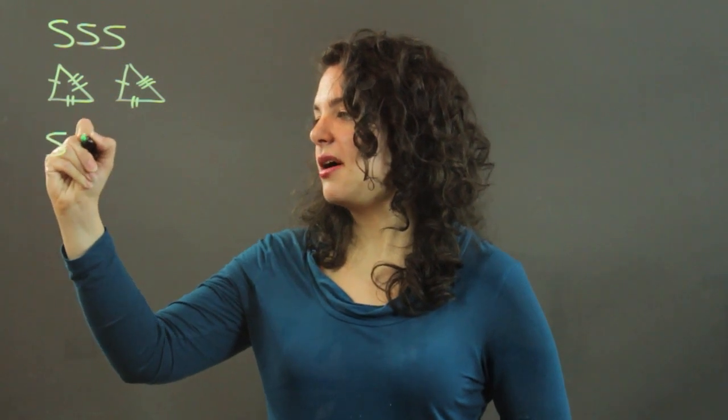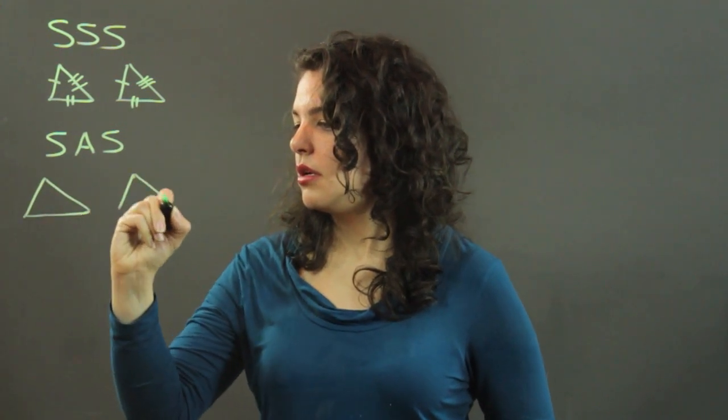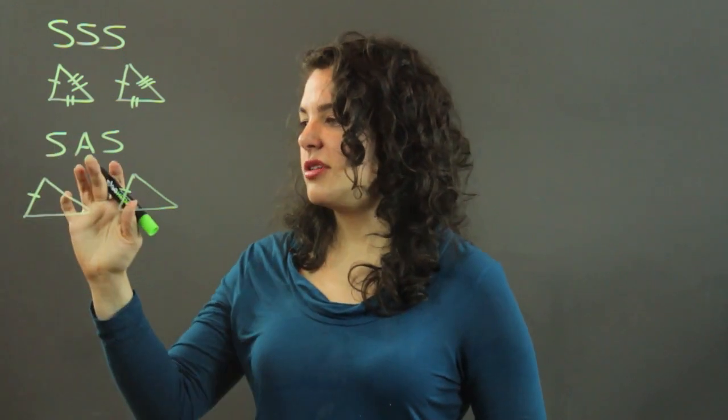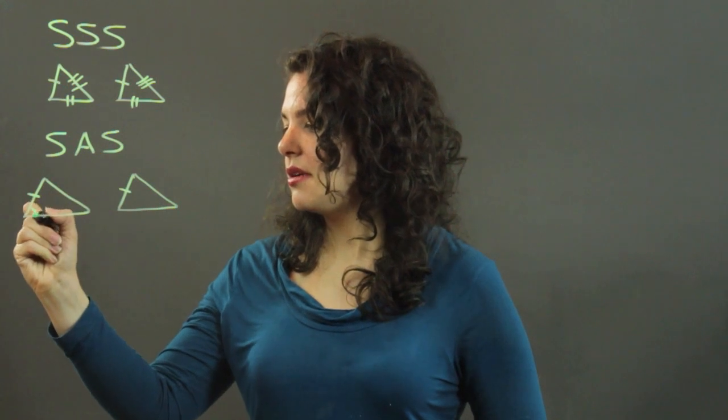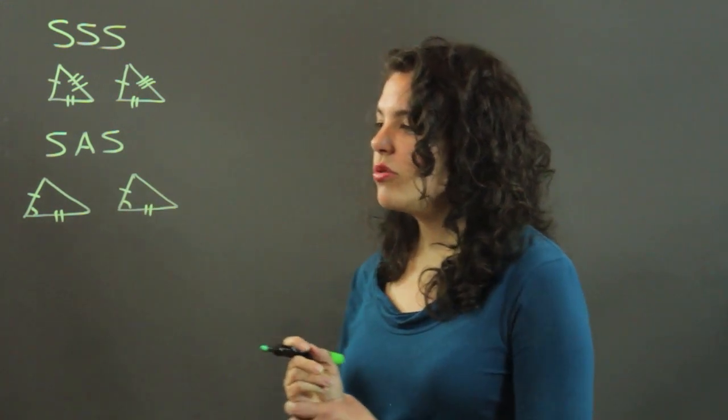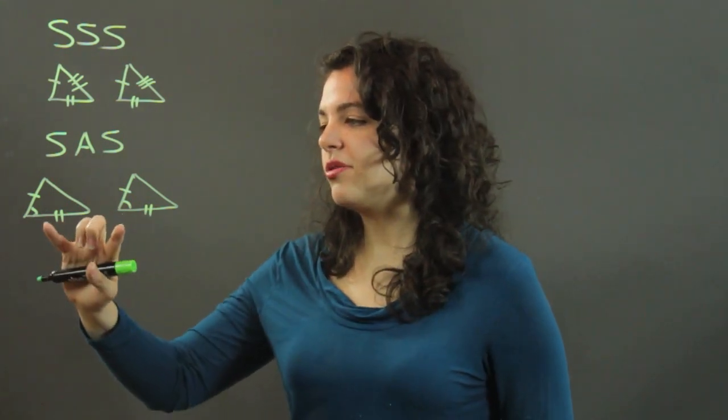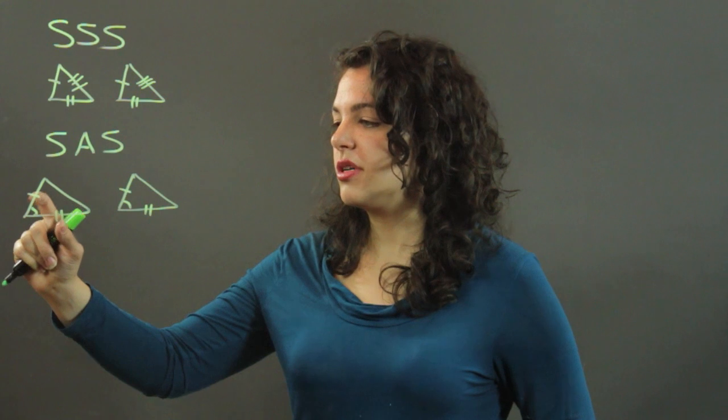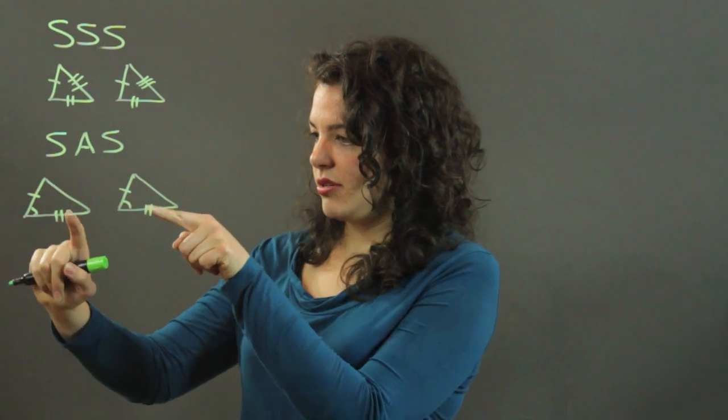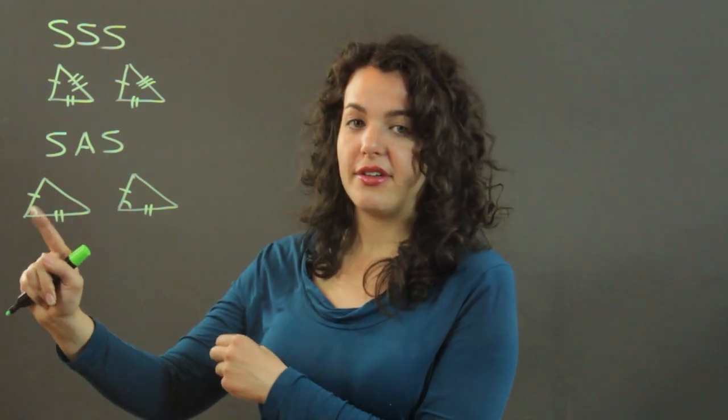Then I have my side-angle-side postulate. In this case, I have one pair of sides, I have what's called an included angle—I'll explain that in a minute—and then a second pair of congruent sides. The included angle means that the pair of angles that are congruent fall between the two congruent corresponding sides. So if I had this angle and this angle and these two sides, that does not qualify because this angle is not in between these two sides. I need this angle, the included angle.